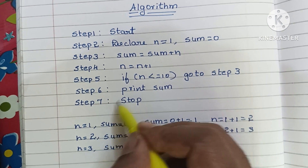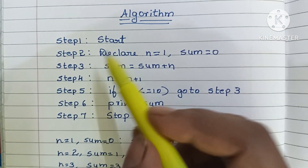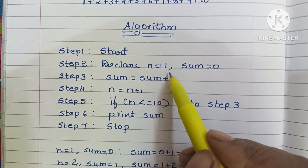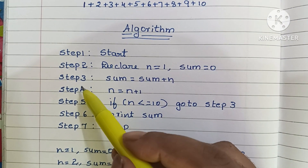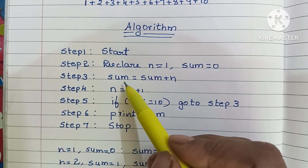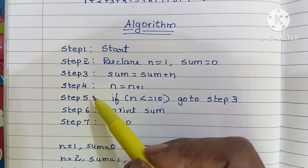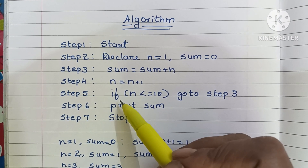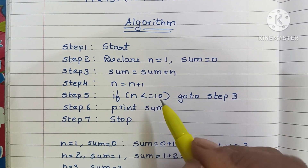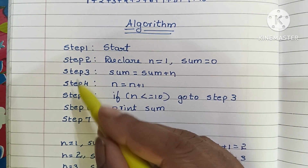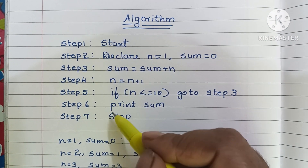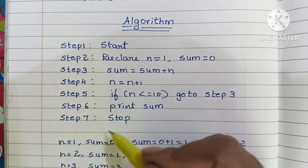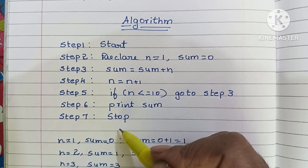To recap: Step 1 is the start statement. Step 2: declare n = 1 and sum = 0. Step 3: calculate sum = sum + n. Step 4: n = n + 1. Step 5: if n is less than or equal to 10, go to step 3; else go to step 6 and print the sum value. Step 7: stop the algorithm.